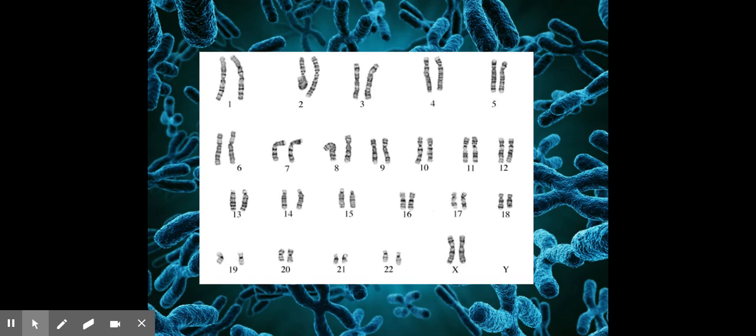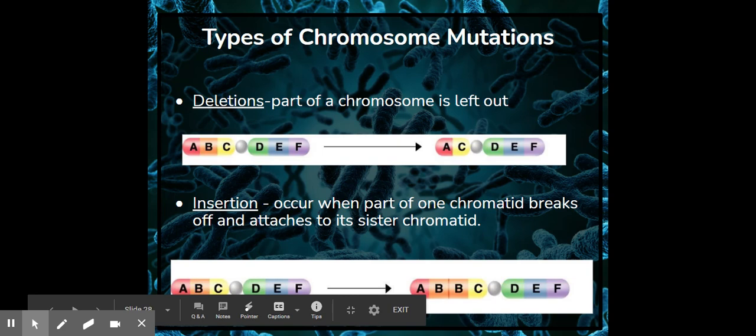This is a karyotype, and that is what they use in order to find chromosomal mutations. Generally what happens, a baby's born, they notice something's different, and they begin to do genetic testing. Also, parents that know they carry certain things can do genetic testing beforehand to see what the probability is that their offspring would carry or actually inherit whatever particular genetic anomaly that the parents are carrying.